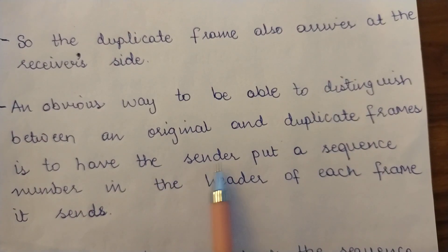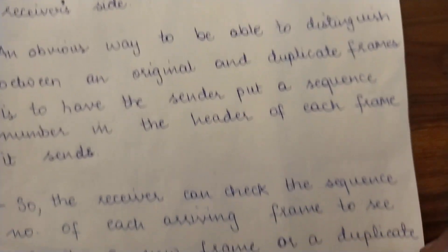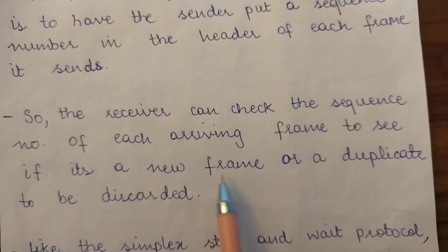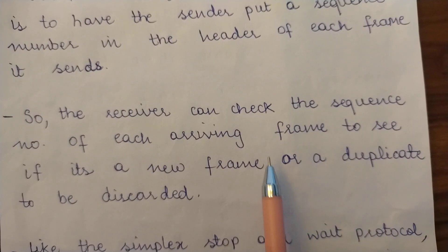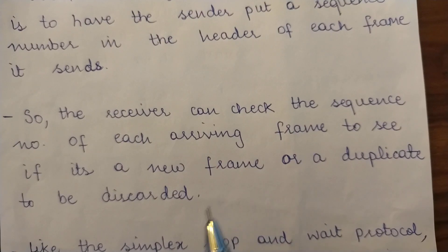One method is to have the sender put a sequence number in the header of each frame it sends, so each frame has a unique sequence number. When the receiver checks the sequence number of each arriving frame, if it is new, it knows it's a new frame. But if the sequence number is repeated — for example, it received a frame with sequence number 4 and then again receives a frame with sequence number 4 — the receiver knows it is a duplicate frame and can discard it.